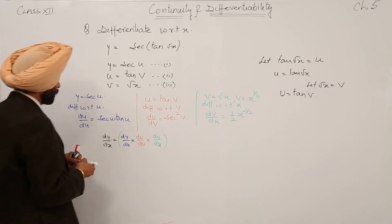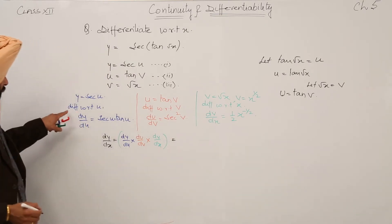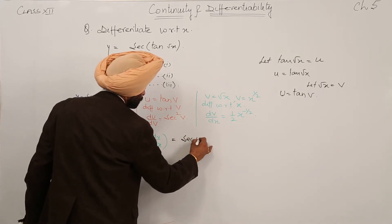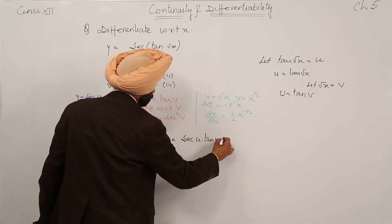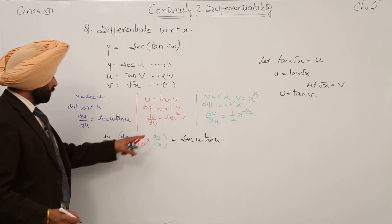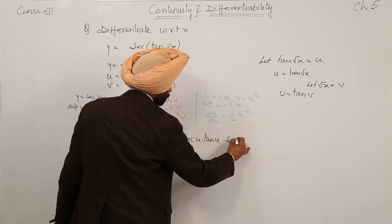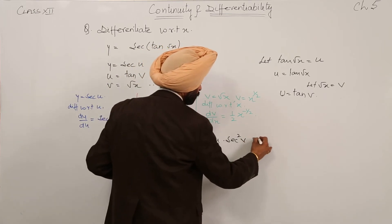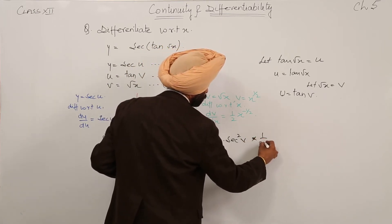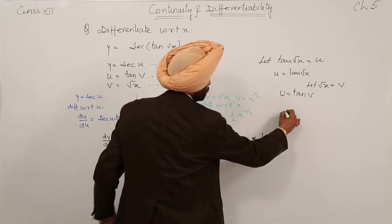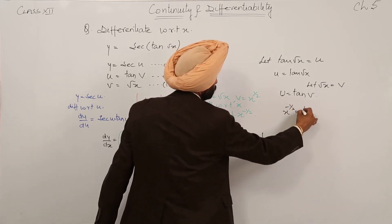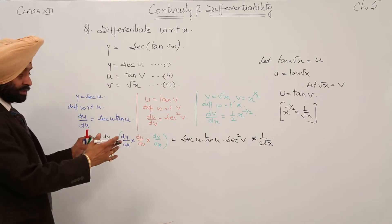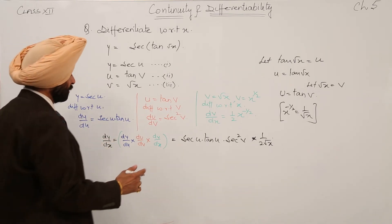The results are: dy by du is secant u tan u, then secant square v, and then 1 upon 2 under root x. Note that x raised to power minus 1 by 2 is equal to 1 upon under root x. This is the result, but we have to go back to the original variables now.